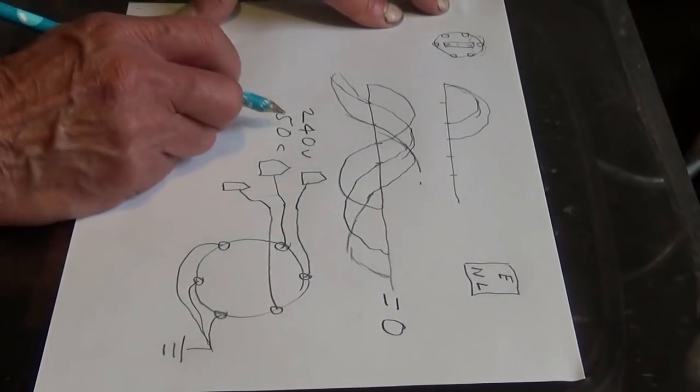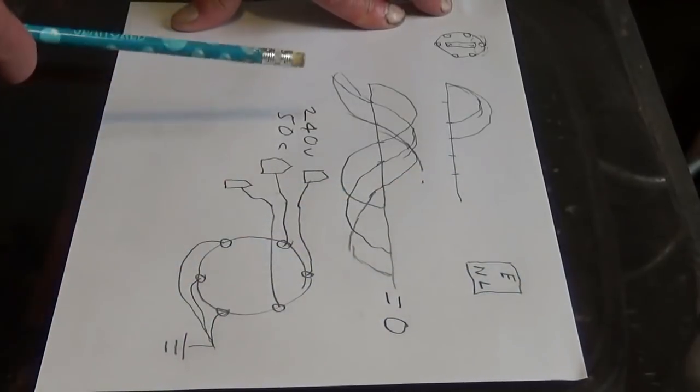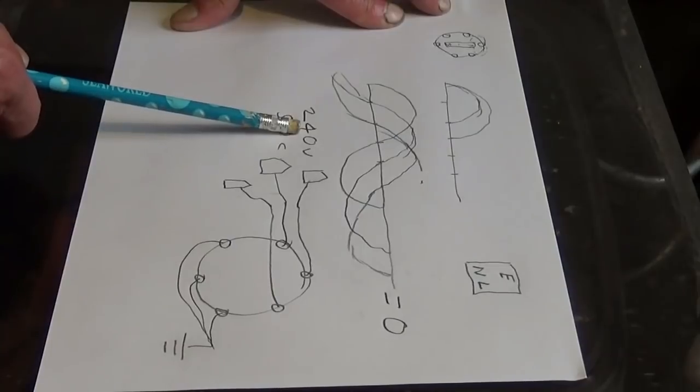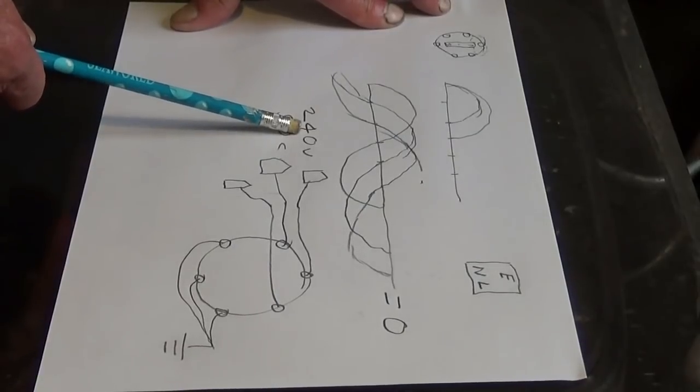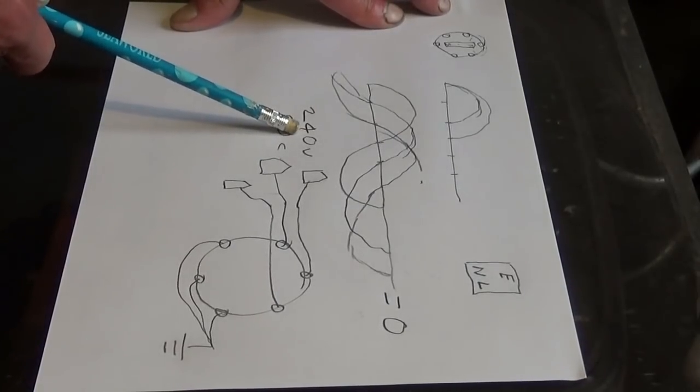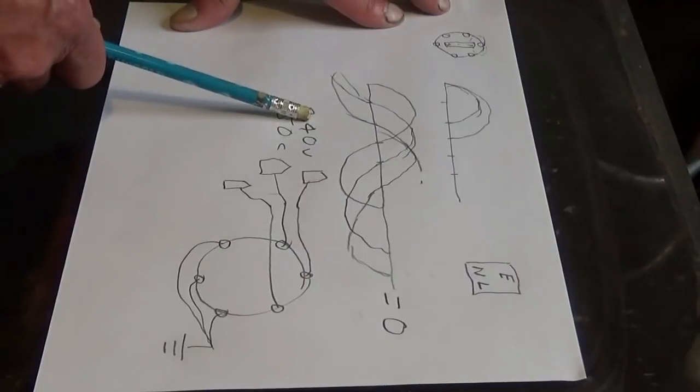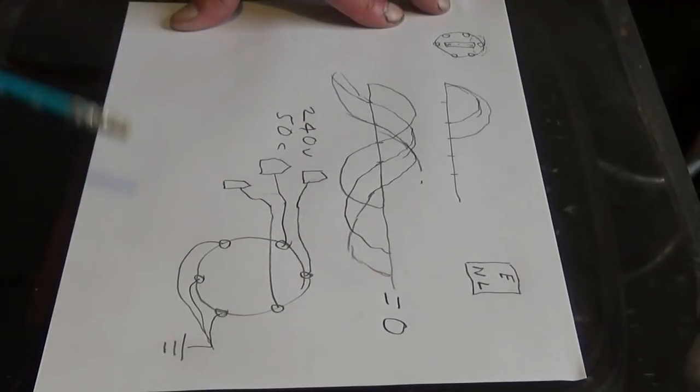Now if you have 110 volts, it doesn't kill you. So why do we have 240 volts? Because the electricity lines coming from the power station can be a lot thinner than 110. So that's why we have 240 volts and why we've got to have so much protection on our electrical equipment.